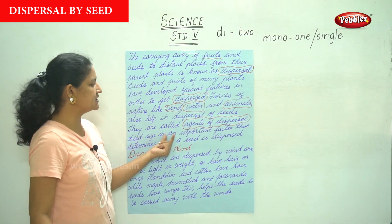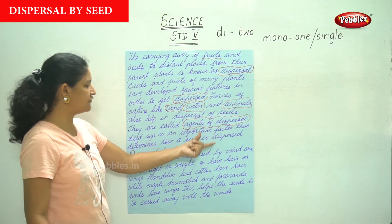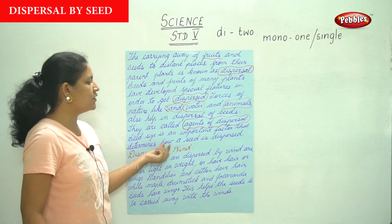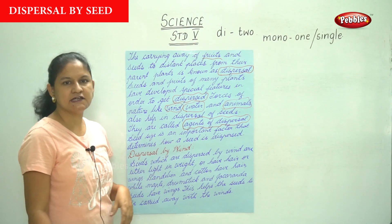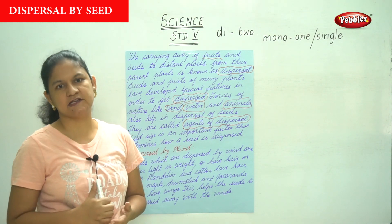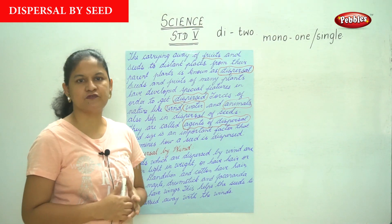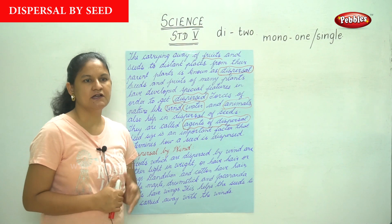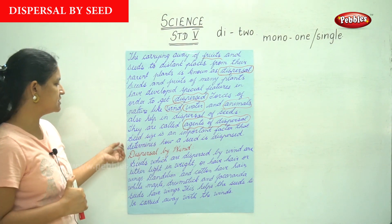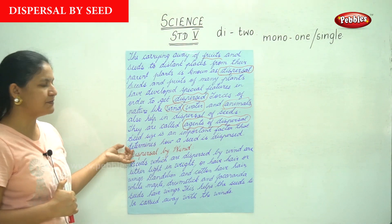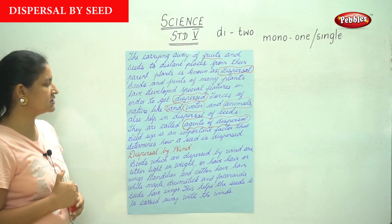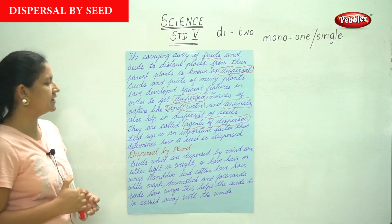Seed size is an important factor that determines how a seed is dispersed. The size of the seed determines or is an important factor in how a seed is dispersed.